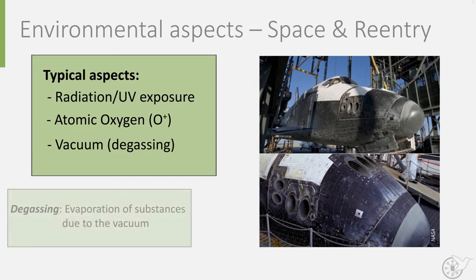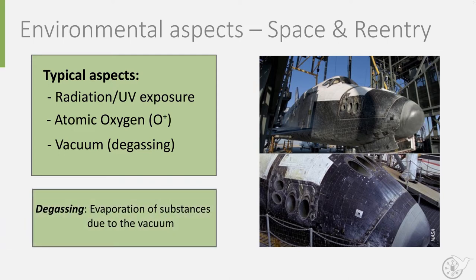In vacuum, outgassing can be an issue. This is the phenomenon that substances evaporate due to vacuum. Many materials such as composites, adhesives and polymers contain substances that can evaporate. Even metals may release gases from cracks or impurities in the metal.